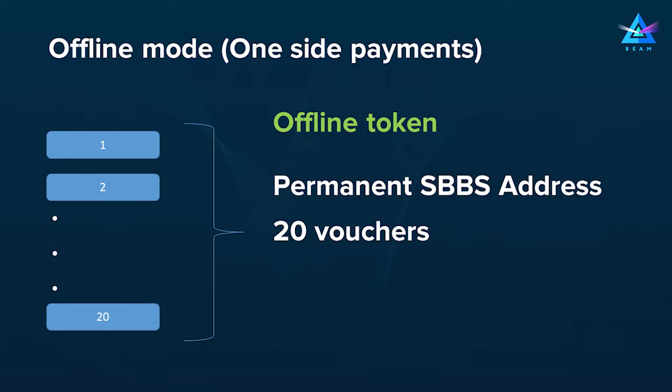When these vouchers are about to expire — in terms of most of them having been used — the wallet will automatically try to contact the permanent SBBS address, which is also encoded in the token, to get more vouchers. This will be possible if the receiver is online during a certain period of time. If the receiver is never online and all the vouchers expire, you will receive a notification that you have no more vouchers to send to this contact, and you can ask the person to send you a new token with a new set of vouchers.